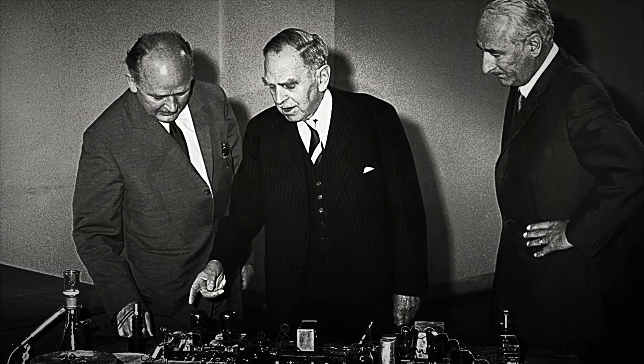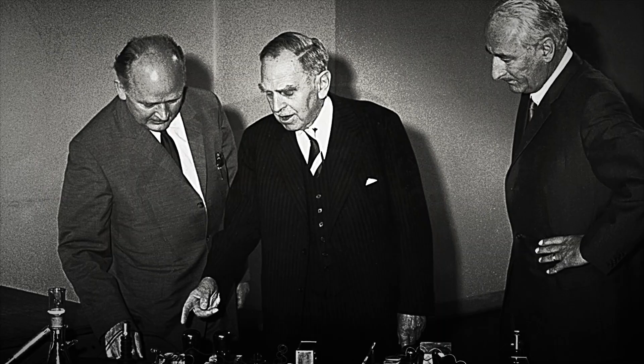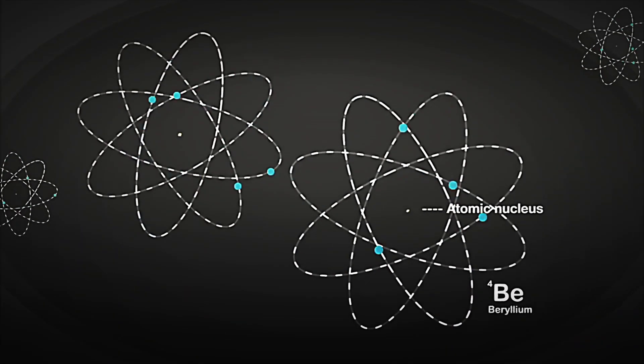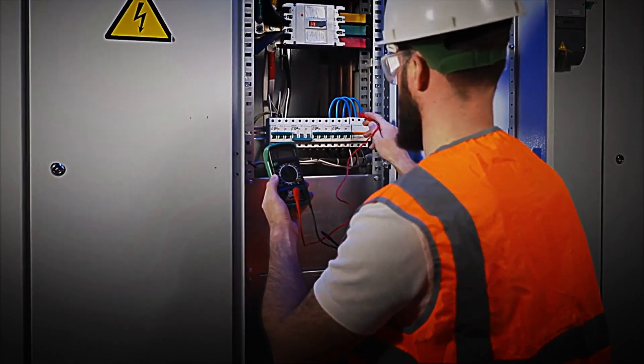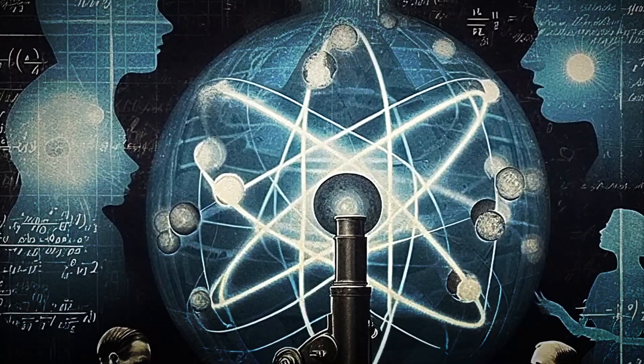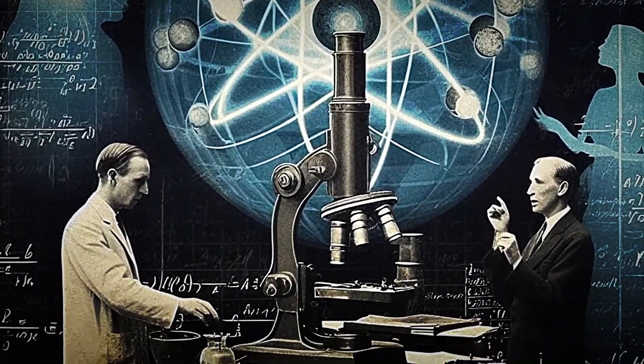In 1938, Otto Hahn and Fritz Strassmann, with contributions from Lise Meitner and Otto Frisch, demonstrated that by bombarding a uranium atom with neutrons, it could be split into smaller parts, releasing enormous amounts of energy. The concept of nuclear fission was born.